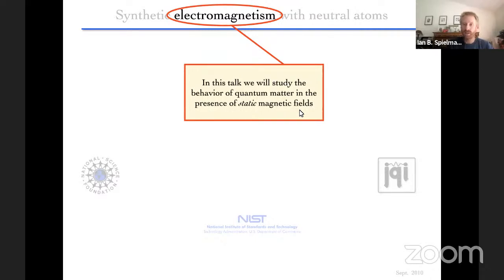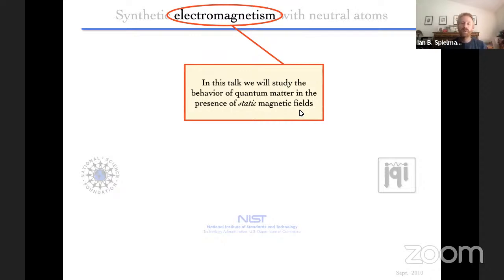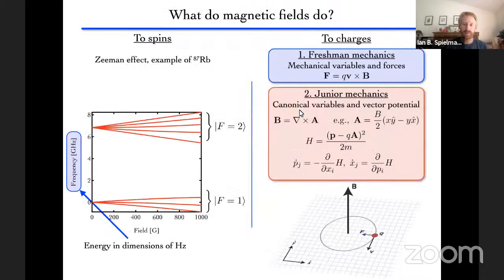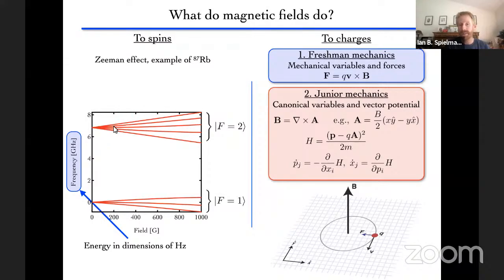These fields will be static in two senses: I will not deliberately change them during any given experiment, and they're static in the sense of not being a dynamical quantum degree of freedom — we won't deal with photons. We impose magnetic fields and see what particles do. If we apply a magnetic field to cold atoms, they only exhibit the Zeeman effect — the eight hyperfine states of rubidium-87 shift linearly in energy with field. But what we want is a force from the cross product of velocity times the magnetic field, giving cyclotron orbits.